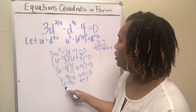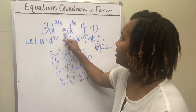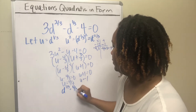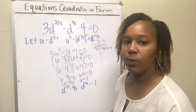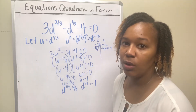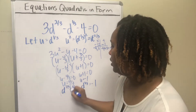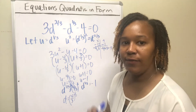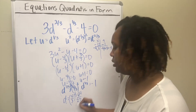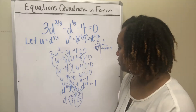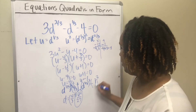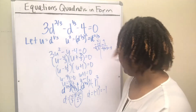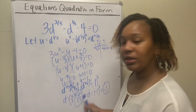Now take each of those, get rid of the u, and insert d back into the equation because we're solving for d, not u. Replace u with d^(1/3) because that's what we let it equal. This is an equation with a rational exponent, so to solve it, raise both sides to the reciprocal power — the reciprocal of 1/3 is 3 — so raise both sides to the 3rd power. You get d = (4/3)³ = 64/27. For the other equation, d = (−1)³ = −1. So your two answers are d = 64/27 and d = −1.